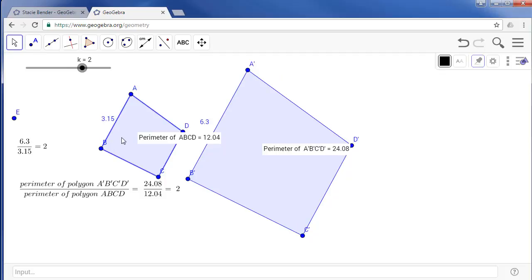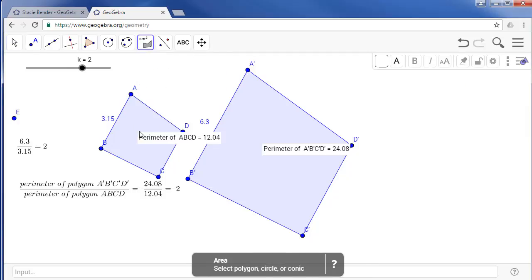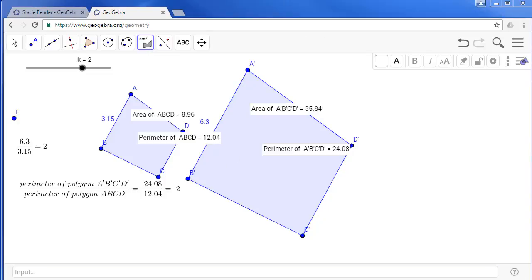So next, let's explore the area. We get our measure tool and choose area. We want to find the area of both polygons. And let's declare one final variable. Let's call it poly area.